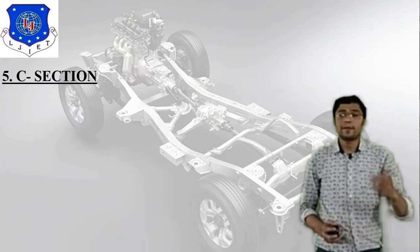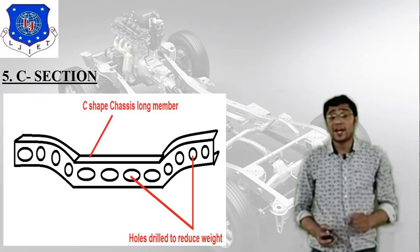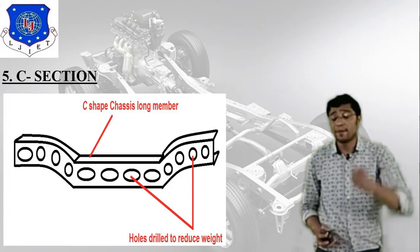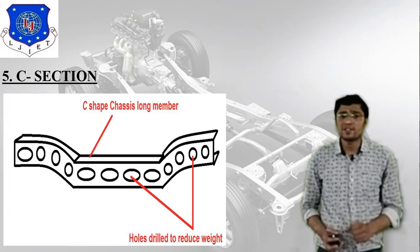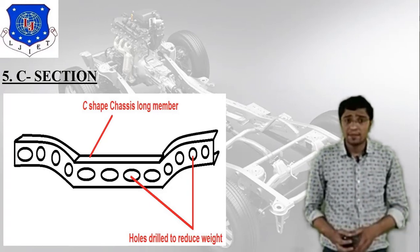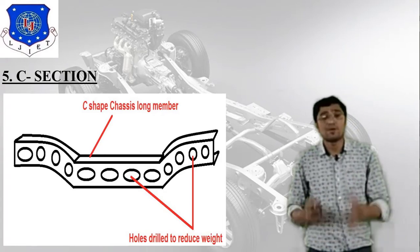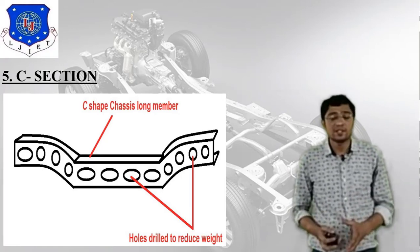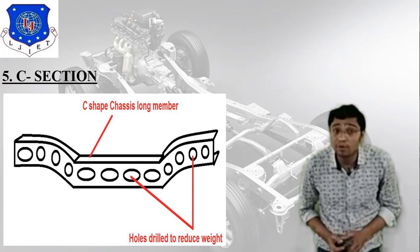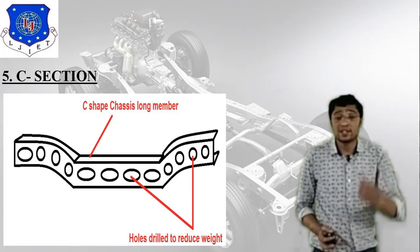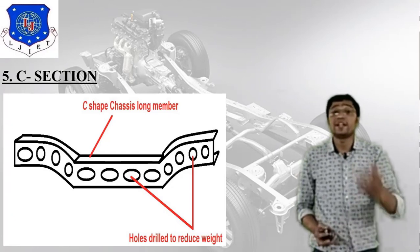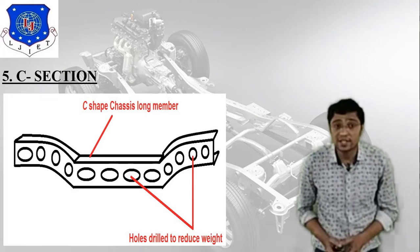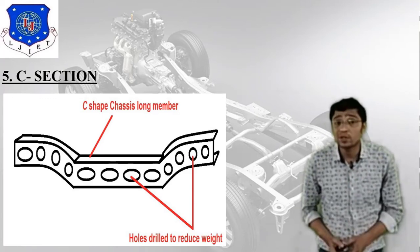The fifth type is the C section. In the image you can directly understand the C section or C frame. You can see that there are many holes in this particular frame, because ultimately we need to reduce the weight of the frame. Regarding application, we have already studied the ladder frame — in the ladder chassis you can find this particular C section, and it is very helpful.